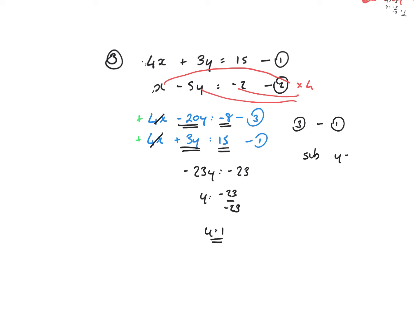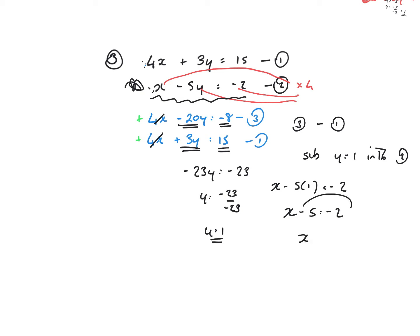I'm now going to substitute y equals 1 into one of the equations. I've got a choice, so I'll randomly choose equation 2. Where I see y I'll replace it with 1: x minus 5 lots of 1 equals minus 2. That's x minus 5 equals minus 2. Bringing that across, x equals minus 2 plus 5, and x is equal to 3.